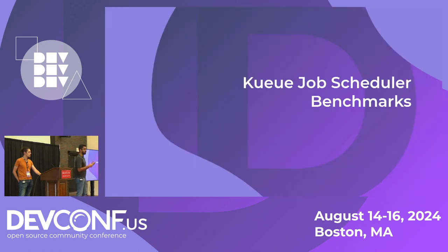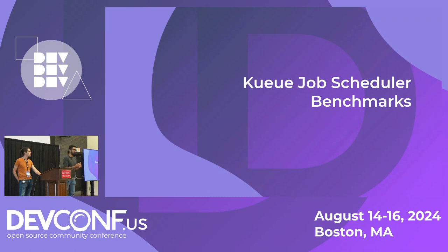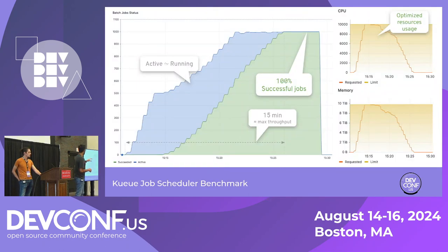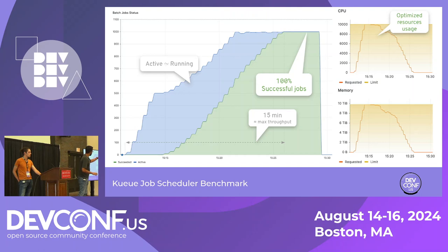This is where job schedulers and queuing systems can come in. We ran benchmarks with Kueue, a project in Kubernetes that gives you job queuing capabilities. Going back to the original test case — 1,000 jobs, 10 pods each — we had 100% success. Looking at memory and resource commitments, we never over-committed, which is great.